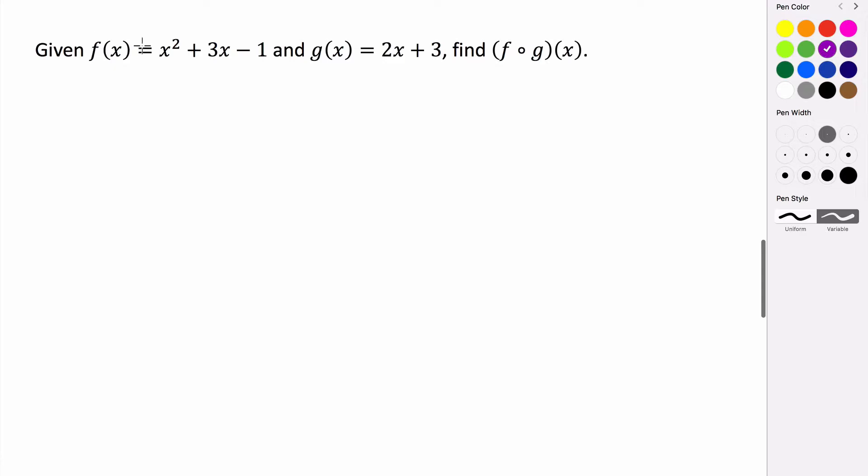So if we're given the function f of x equals x squared plus 3x minus 1 and g of x is equal to 2x plus 3, we want to find this composition, f of g of x.